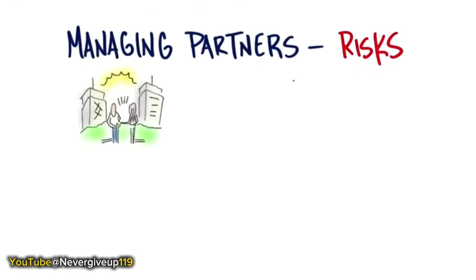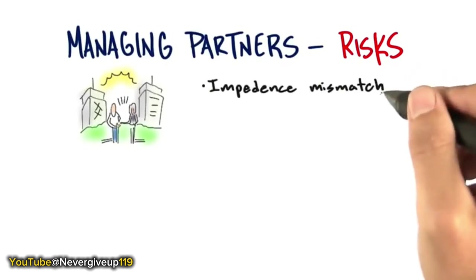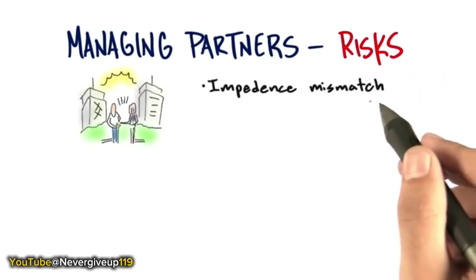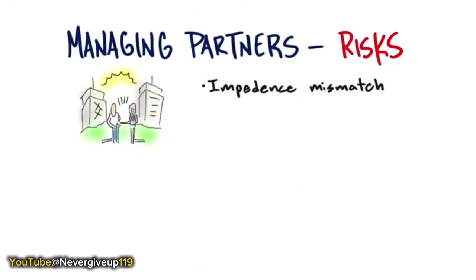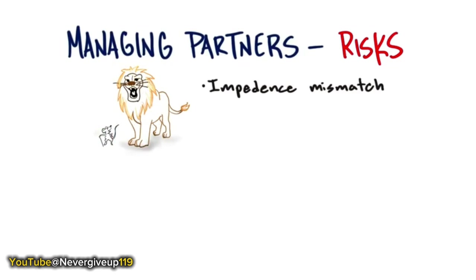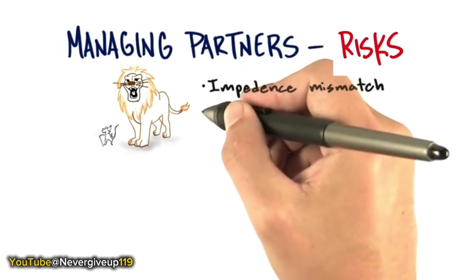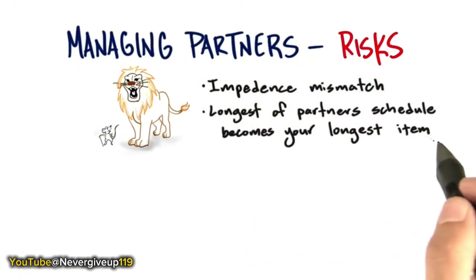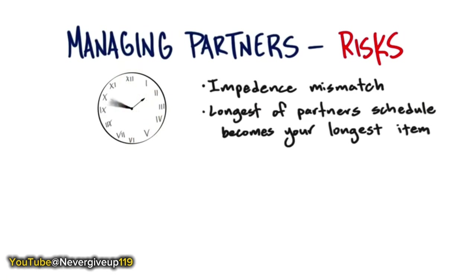Let's think about risk in managing partners. The biggest one is what I call impedance mismatch. In a startup, you barely register on a large company's radar — in fact, your entire company's staff is probably less than the administrative staff of the CEO's office of some of these companies. The longest of the partners' schedules becomes your longest item. Large companies say 'we'll make that decision at our planning meeting' — and that meeting is quarterly. Quarterly — 90 days — to a startup is like, wow, we make decisions in an hour and a half. Their meeting and decision schedules now slow you down when you should be working at intense speed and tempo.